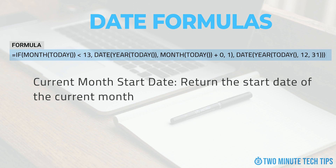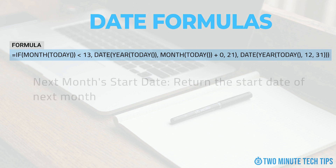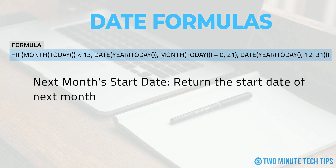For example, if we want to return the 21st day of the current month, we would change the 1 to a 21. If we want to return the start date for the next month, we would use this same formula but change the plus 0 in the month formula to a plus 1. We would also change the 21 back to a 1.